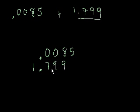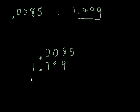What's key — and if you get this point and you already know how to do addition, you've already figured out how to add decimals — is that you line up the decimal points. Once we line up the decimal points, we're ready to start adding.